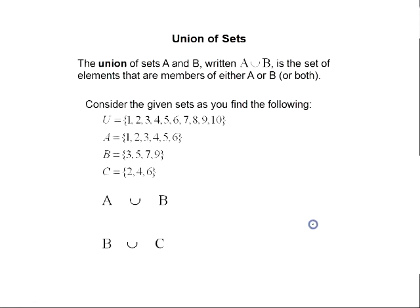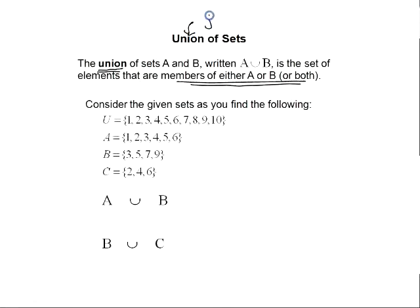Let's talk about the union of sets A and B. The union of sets A and B, written A∪B, is the set of elements that are members of A or B or both. If you think about union, you think about joining together.